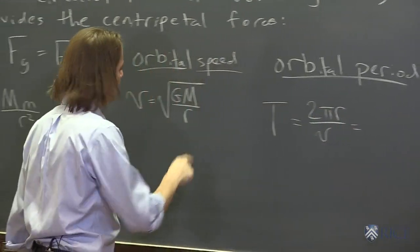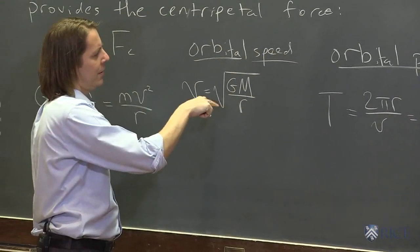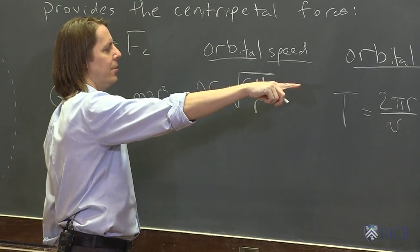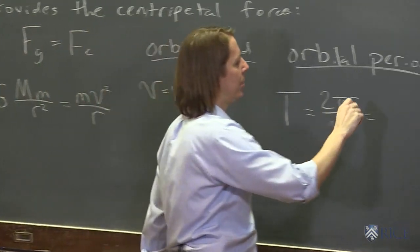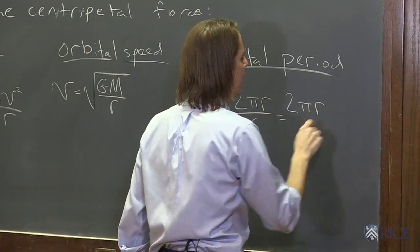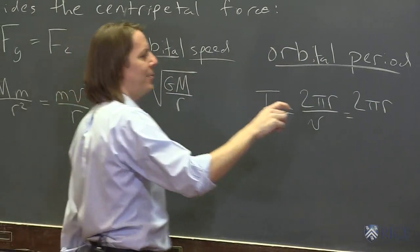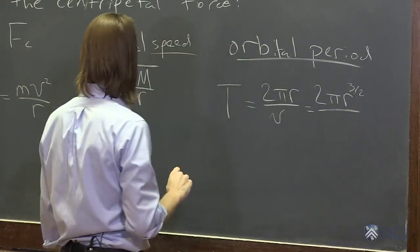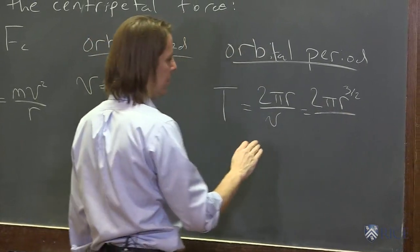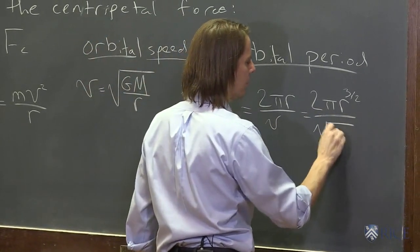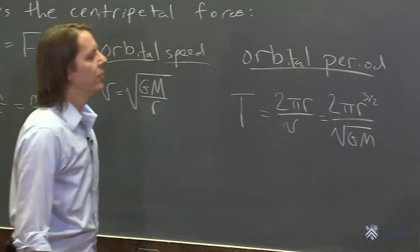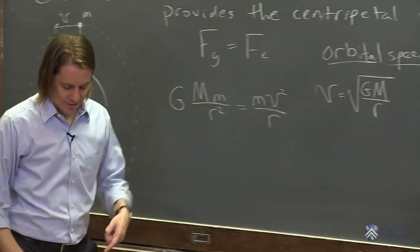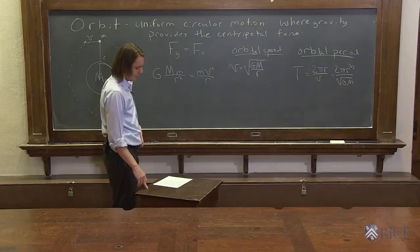So that means it's 2 pi R divided by the square root of GM. Then you get an R up here. Right? So it's 2 pi. And let's say you get a square root of R to the top. That makes that R to the 3 halves, as we say, over the square root of GM. So that's your orbital period. That's the time it takes for the thing to go around.